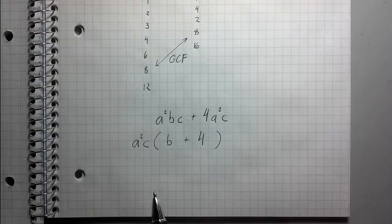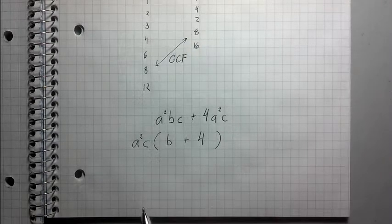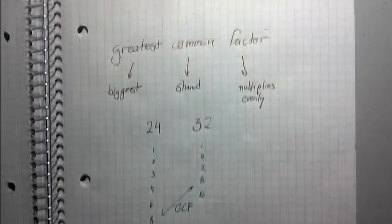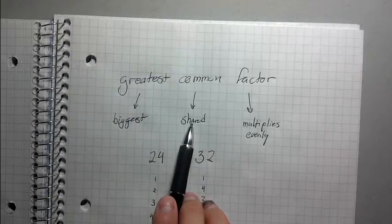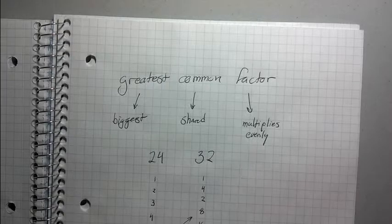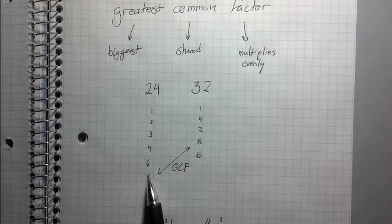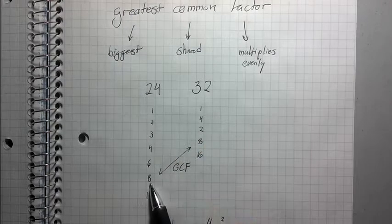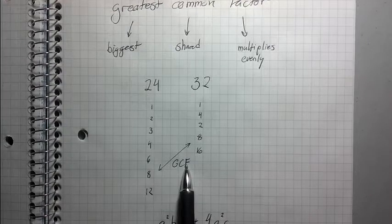So let me just do a real quick overview, because I feel like I went all over the place on this video. I'm just going to start from the beginning. Greatest common factor is the same as saying the biggest shared thing that multiplies evenly. So in this case of 24 and 32, 8 is the biggest shared thing that multiplies evenly into each of these numbers. So therefore, it is the greatest common factor.